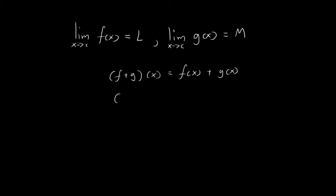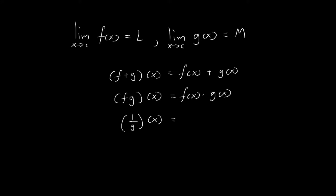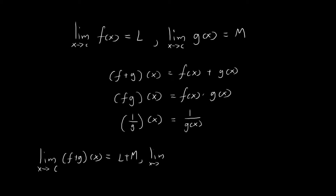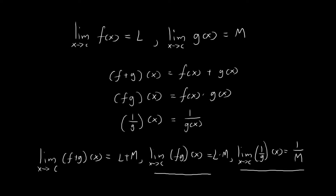We also defined another function, f times g, whose outputs are equal to f of x times g of x. And we had another function, 1 over g, whose outputs are defined as 1 divided by g of x. For these three separate functions, we found out in the previous videos, using epsilon-delta definitions, that they do indeed have limits as x tends towards c. For f plus g the limit is l plus m, for f times g it is l times m, and for 1 over g it is 1 over m.